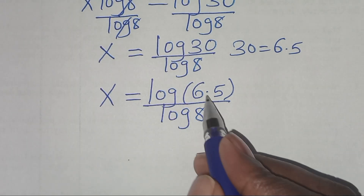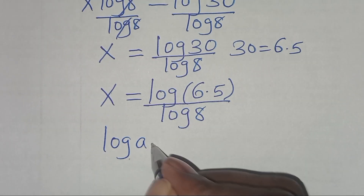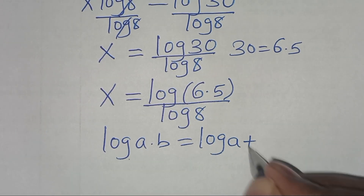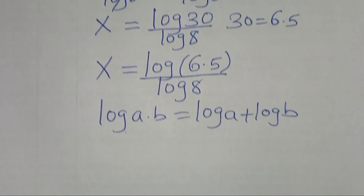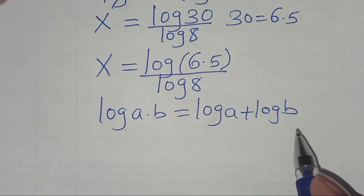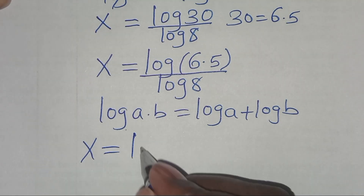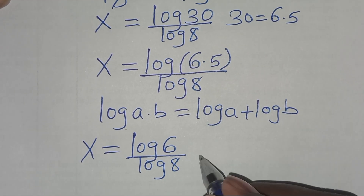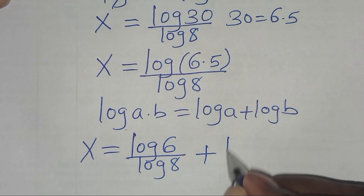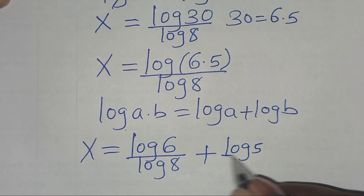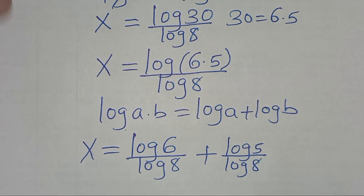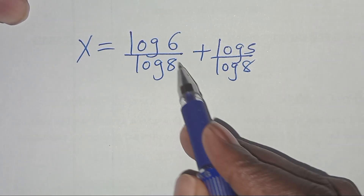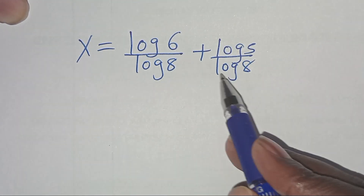Now, log(6 times 5) is in the form of log(a times b), which we can express as log a plus log b. Applying this logarithm property, then we'll have that x is equal to log 6 divided by log 8, plus log 5 divided by log 8.